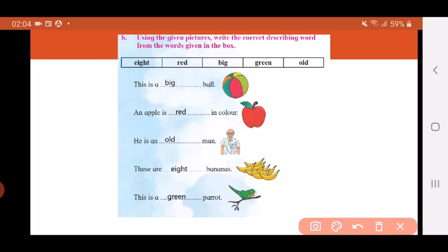Next one: An apple is dash in color. Which color? Red. An apple is red in color.